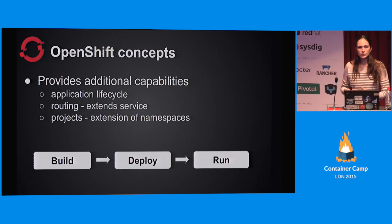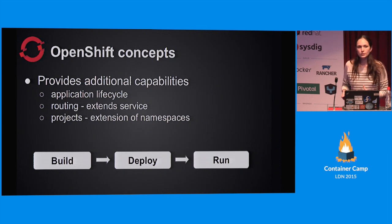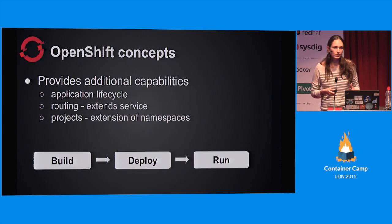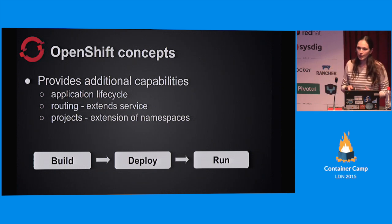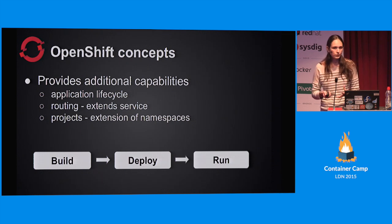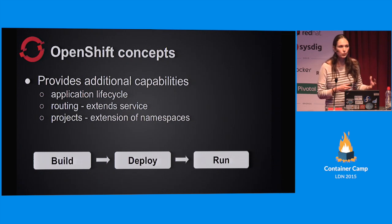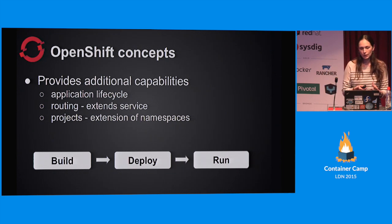OpenShift also takes services and extends that notion with routing, which is similar to services but provides us with the ability to do that with externally recognizable host names, and not only with IPs. And projects allow us to group those resources - for example, you can give every development team a different project and group the resources based on some criteria.